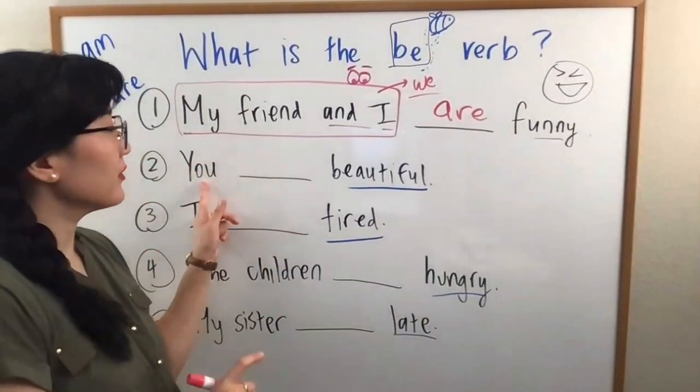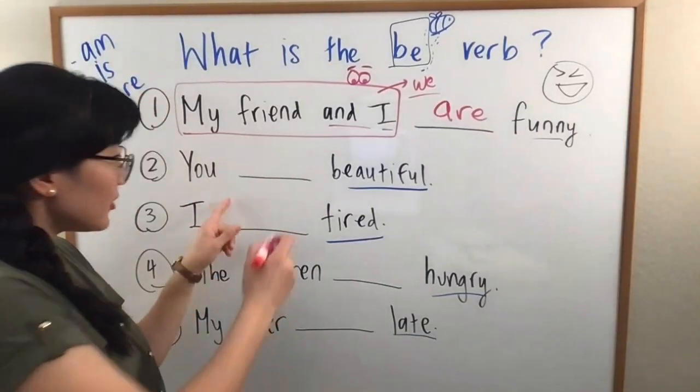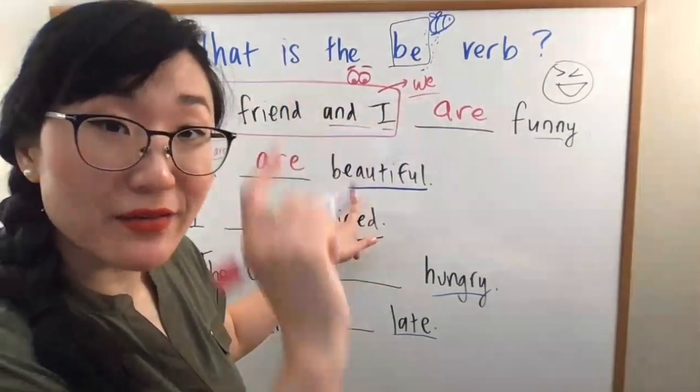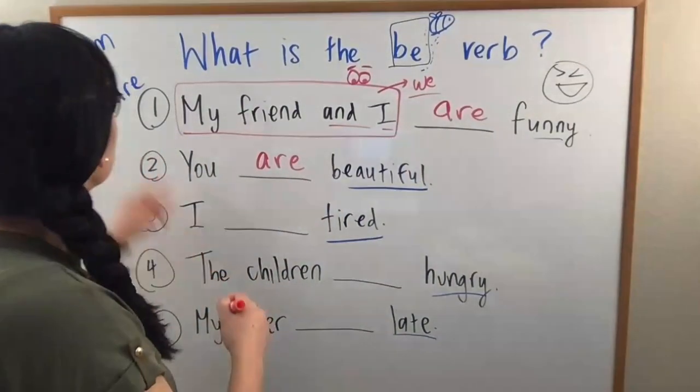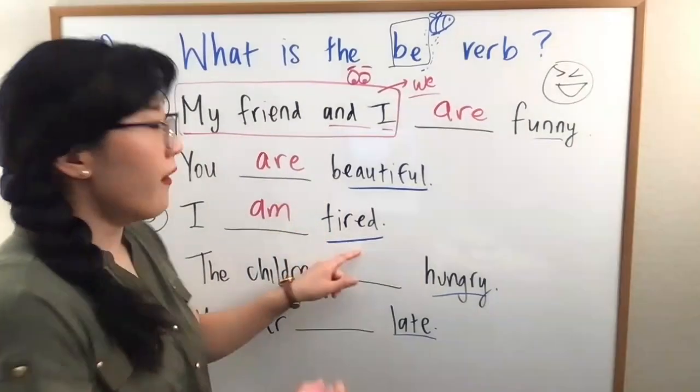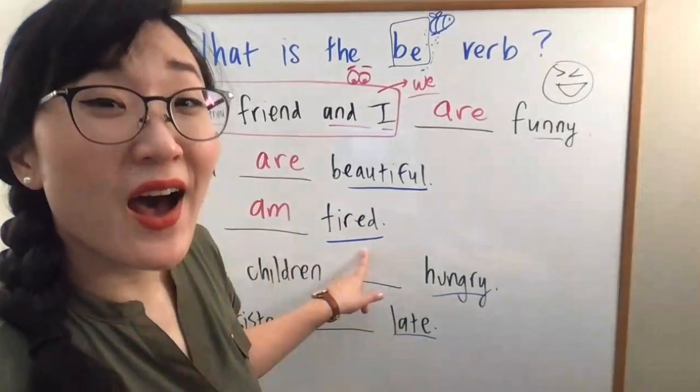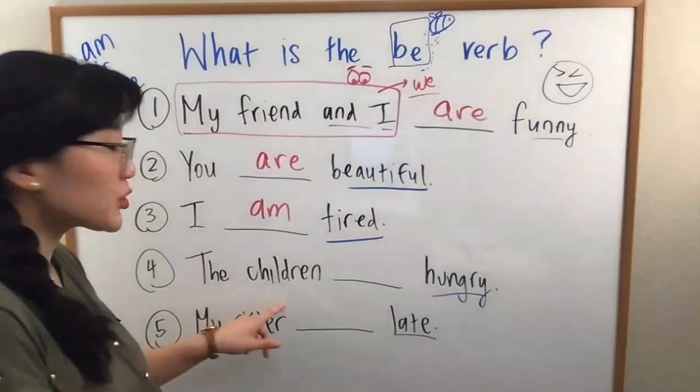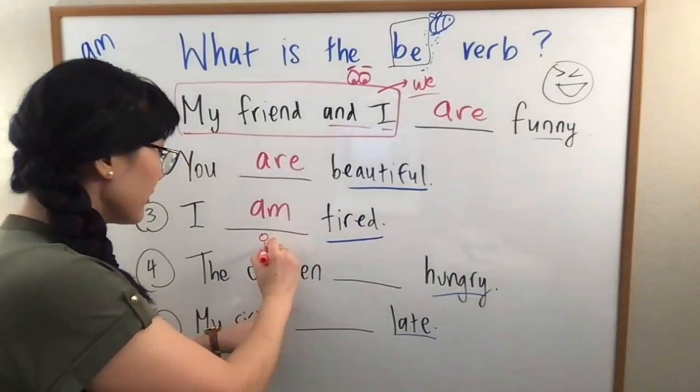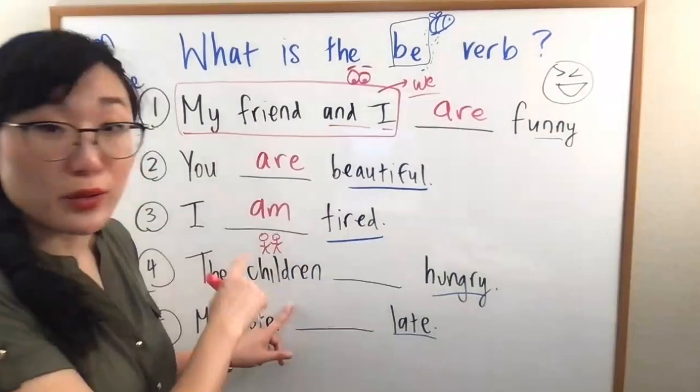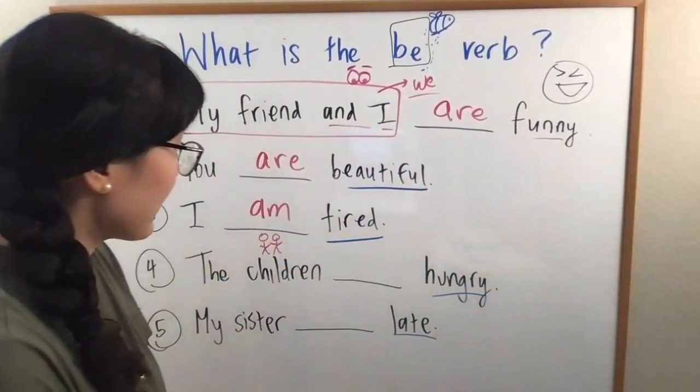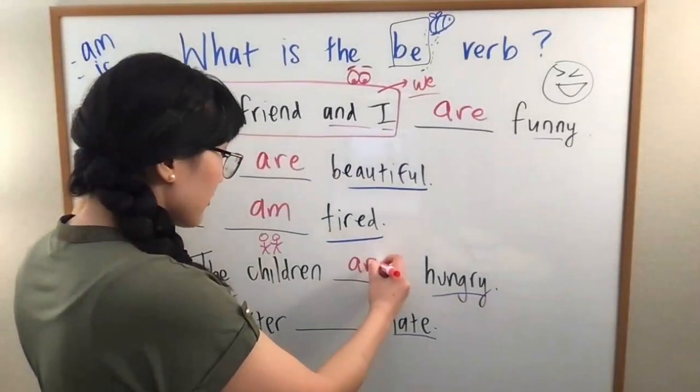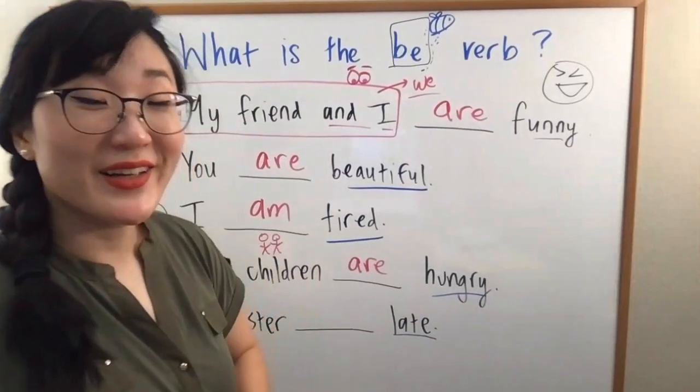You. You are beautiful. I am tired. Tired. Tired. The children. The children. Plural. So, they. They. They. Are. Hungry. Hungry.